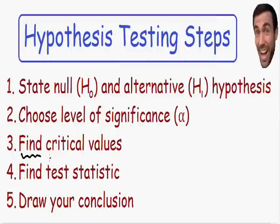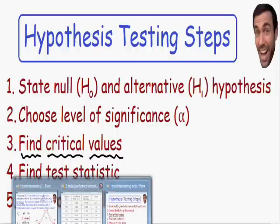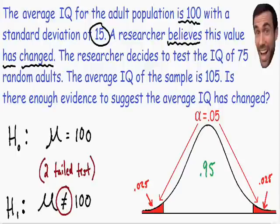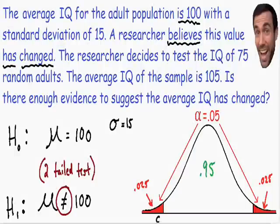Step number three is to find the critical values. The critical values can be a z value or a t value. We always use a z value if the population standard deviation is known. In this example, the standard deviation of 15 is given, so the population standard deviation sigma equals 15, and we will use a z-test. The critical values are the z values that separate the shaded tail areas from the middle area of the curve.